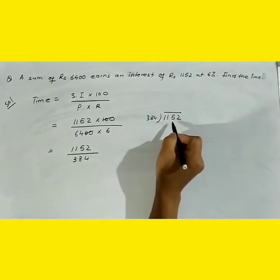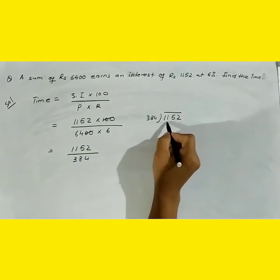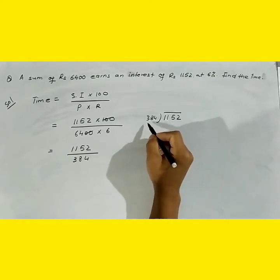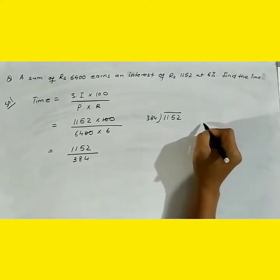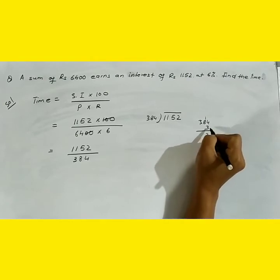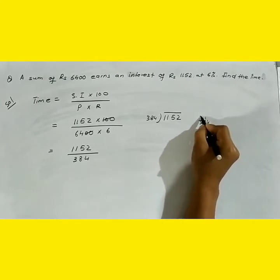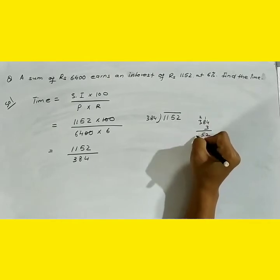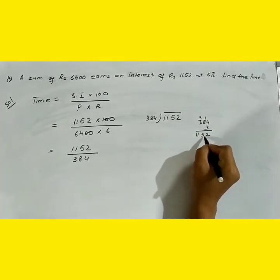Working through the division: 384 goes into 1152 three times. Let me verify this: 384 multiplied by 3 equals 1152. So the answer is confirmed.